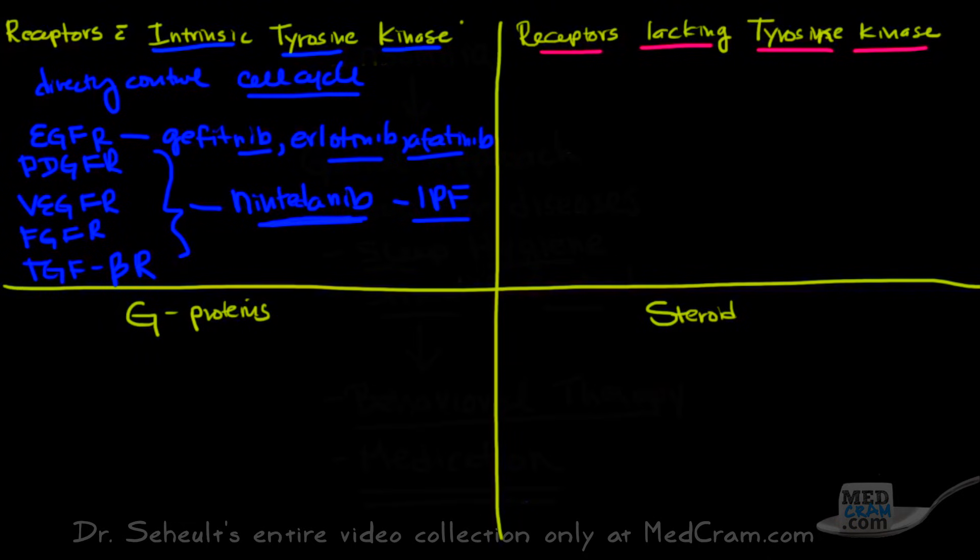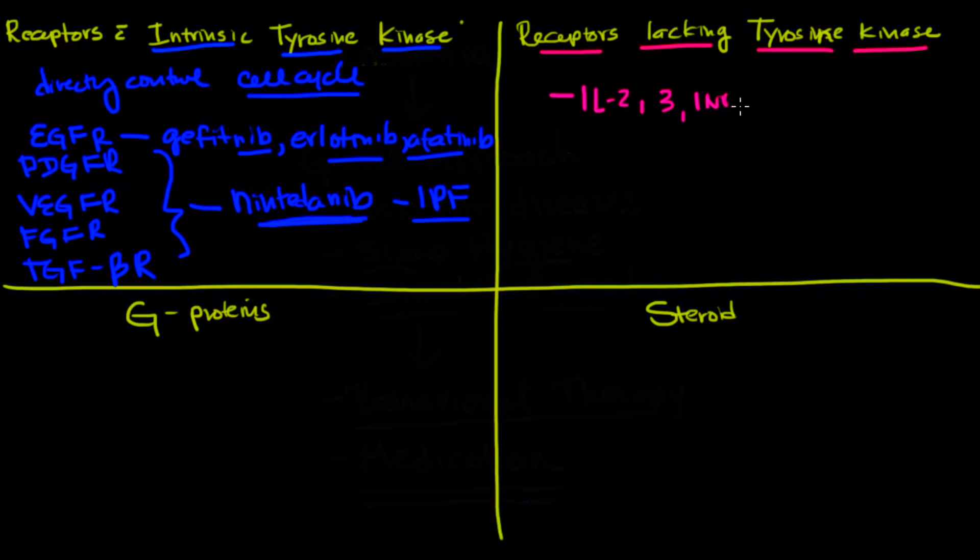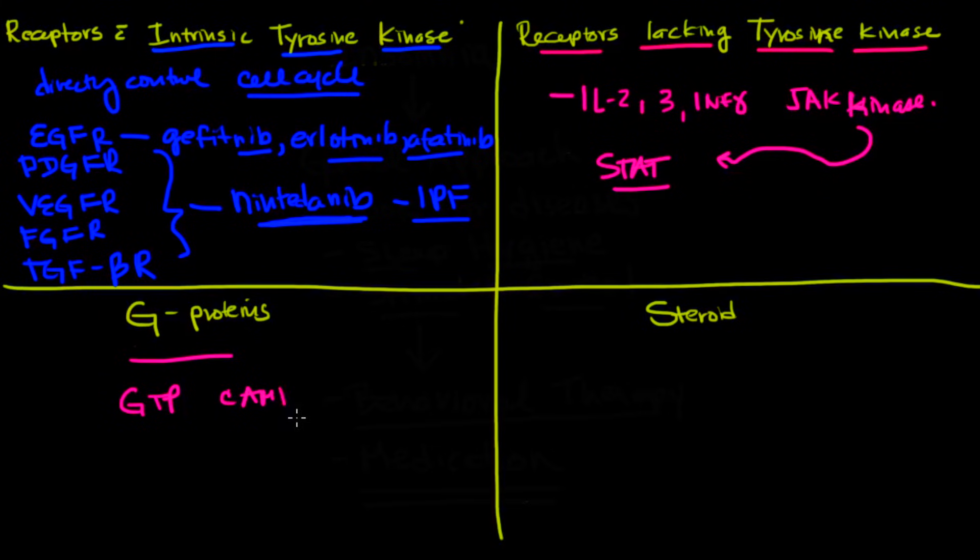Now, real quick. Cells that lack tyrosine kinase would be receptors like IL-2, 3, interferon gamma, and they actually use something called a JAK kinase. And then they signal to the cell using something called STATs. These are second messenger things that go into the nucleus and transcribe from there. You may recall that G proteins use GTP, and they use cyclic AMP as second messengers. And then, finally, steroid hormones are steroids, of course, that kind of look like vitamin D.